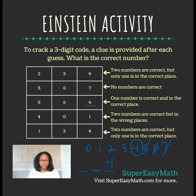The last clue says two numbers are correct but only one is in the correct place. We still know that 4 is the one that's correct, and then it's going to be either the 1 or the 2 — but we're still not sure which.